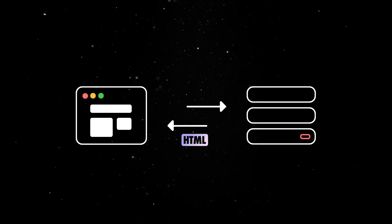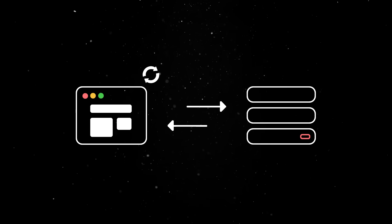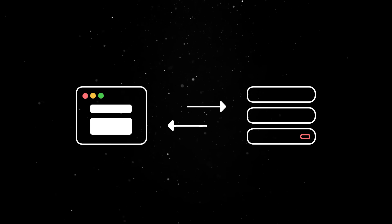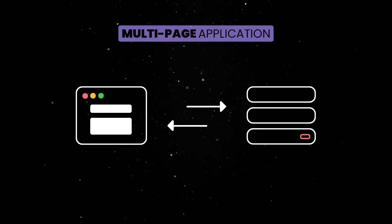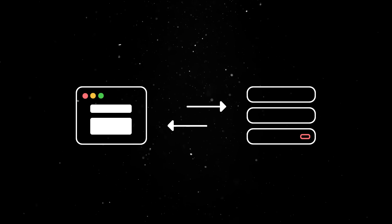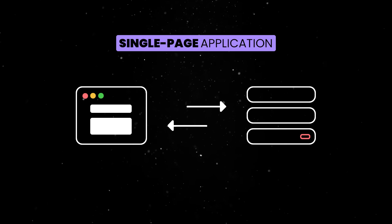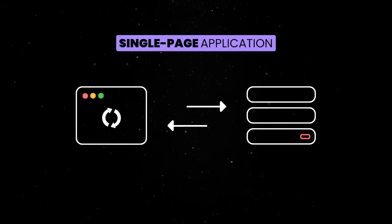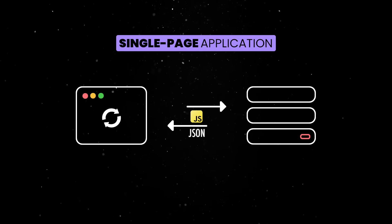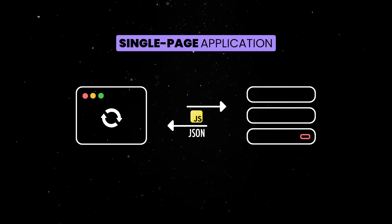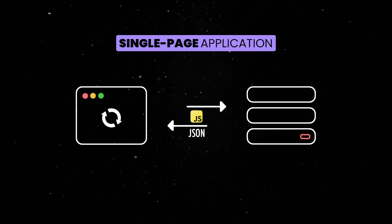When the HTML response comes back, the browser will parse it and replace the existing page with the new one. We call this a multi-page application architecture. The alternative is the single-page application architecture, where the HTML is usually rendered on the client using JavaScript files and JSON data sent from the server. This approach has some benefits, but comes with a lot more complexity.